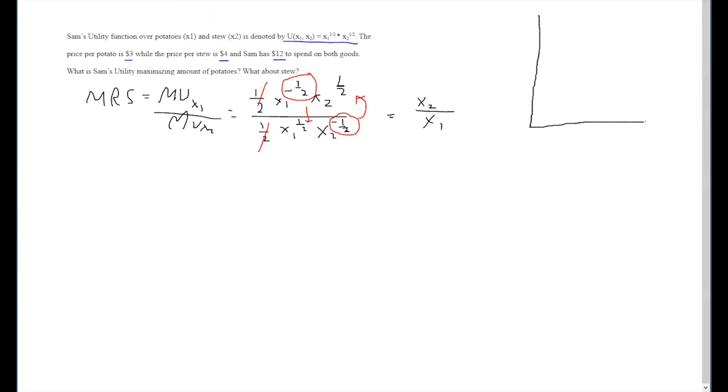If we're looking at a graph, here's our utility curve. This utility curve at any one given point has a tangent line whose slope is x2 over x1, as we've said here.